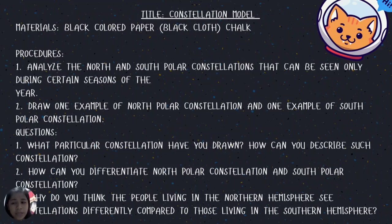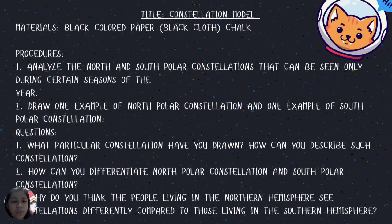For Learning Task Number 1, prepare materials — you may also use other materials at home. You may ask the help of your parents, guardians, or any adult family member. Materials needed: black colored paper or black cardboard and chalk. Procedure: analyze the north and south polar constellations that can be seen during certain seasons. Draw one example of a north polar constellation and one example of a south polar constellation, then answer the questions: What constellation did you draw? How can you describe it? How can you differentiate north polar from south polar constellations? Why do people in the northern hemisphere see constellations differently from those in the southern hemisphere?